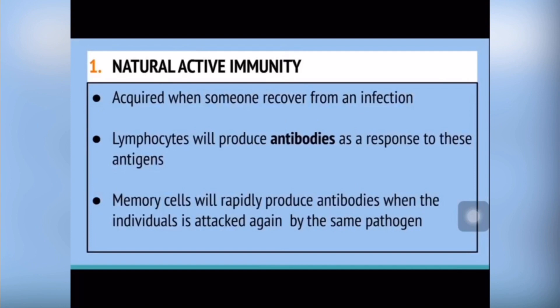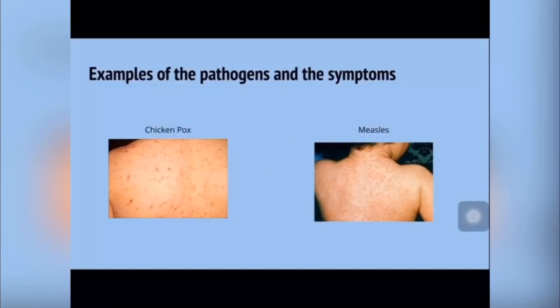Natural active immunity is acquired when someone recovers from an infection. Lymphocytes will produce antibodies as a response to these antigens. Memory cells will rapidly produce antibodies when the individual is attacked again by the same pathogen. Examples of the pathogens and the symptoms are chickenpox and measles.